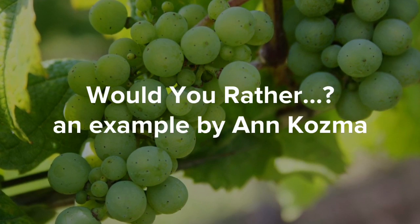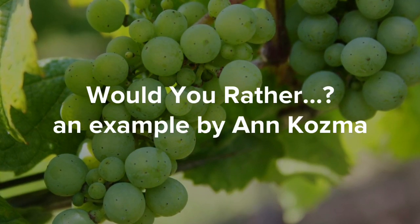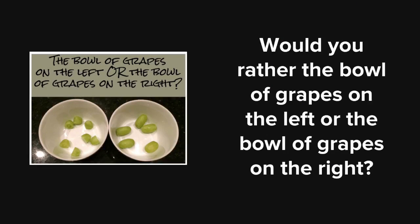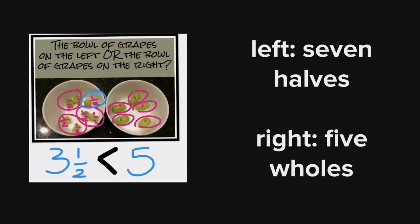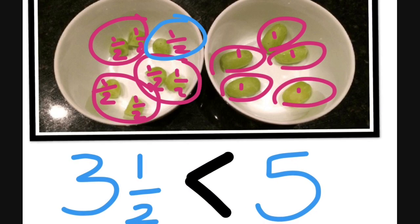Would you rather, an example by Ann Cosma. Would you rather the bowl of grapes on the left or the bowl of grapes on the right? When you count these out by halves, the bowl on the left has seven halves, but the bowl on the right has five wholes. And three and one half is less than five.